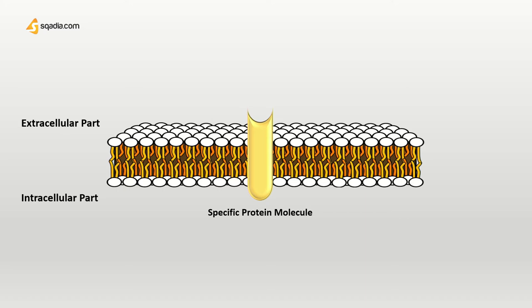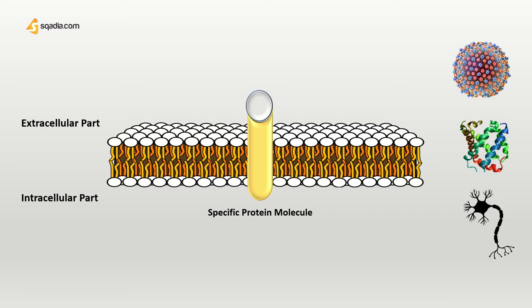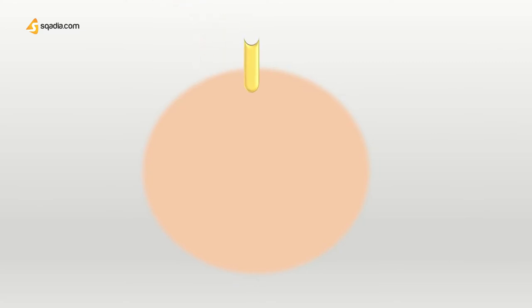On the extracellular part, these receptors possess a special site that binds to a special molecule called a ligand. This could be any molecule, from inorganic minerals to organism-created proteins, hormones, and neurotransmitters. In this case, it would be a drug. This receptor-ligand complex encompasses the signal perception by the cell.